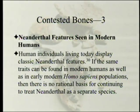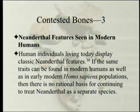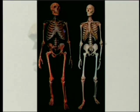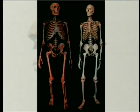Neanderthal features seen in modern humans: human individuals living today display classic Neanderthal features. If the same traits can be found in modern humans as well as in early modern Homo sapiens populations, there is no rational basis for continuing to treat Neanderthal as a separate species. Looking at skeletons: you can see the ribcage tapers all the way through — that's funnel-shaped versus barrel-shaped chest. Is it enough to make a brand-new species? The authors argue no.